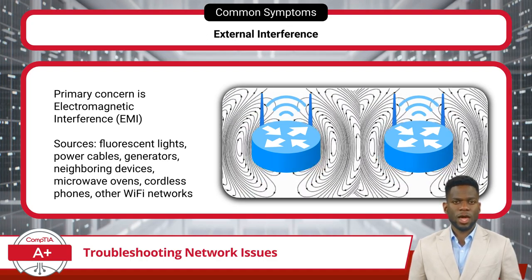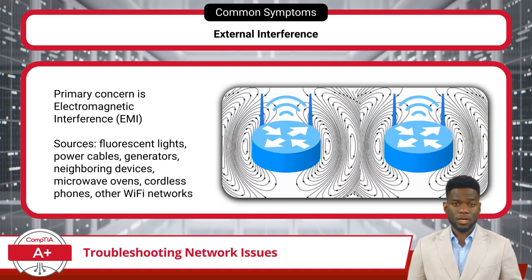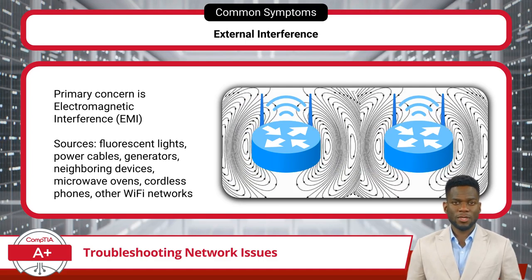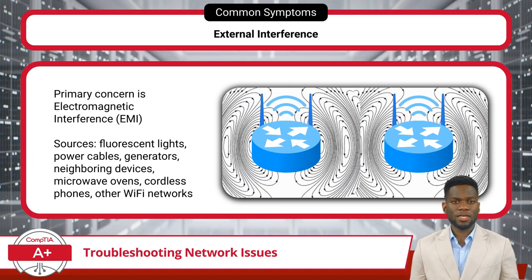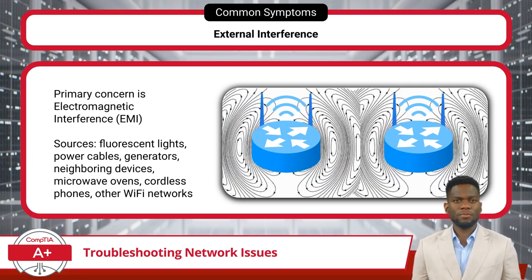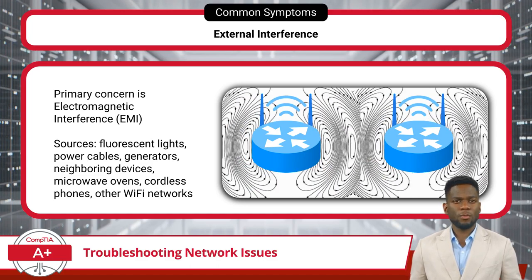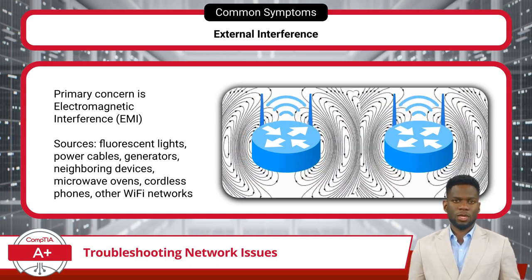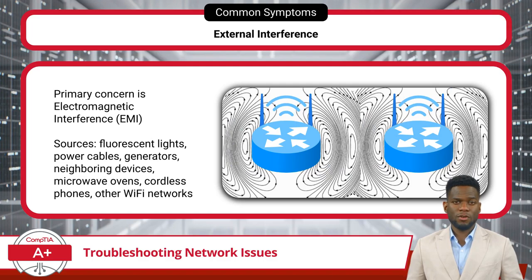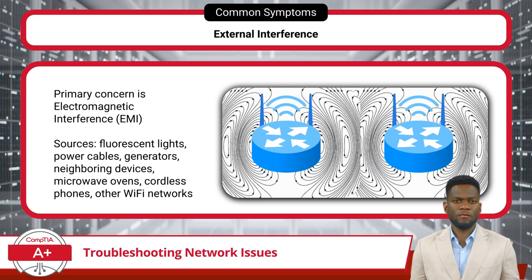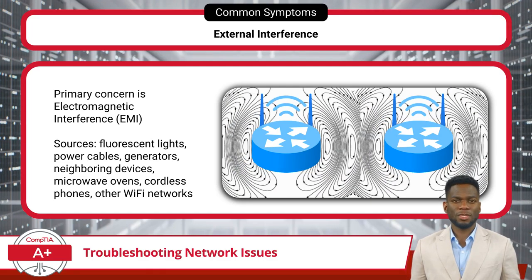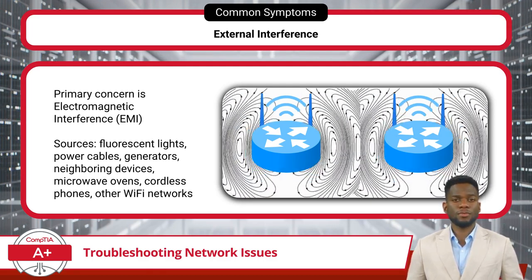Shielded cables help deflect electromagnetic fields, preventing them from interfering with the data signals. Additionally, ensuring that network cables are routed away from power cables and other potential sources of interference can further minimize the risk of EMI-induced disruptions.